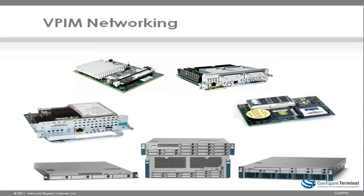I explained VPIM networking, where we networked multiple devices including Cisco Unity Express with Cisco Unity Express, as well as Cisco Unity Express with Cisco Unity Connection. VPIM allows for the transmission of voice messages between multiple messaging systems, including Cisco Unity, Cisco Unity Connection, Cisco Unity Express, and third-party messaging systems. Please ensure that you watch the VPIM networking video before continuing, as I explain the basics of sending and receiving messages between multiple messaging systems. I'm now going to assume that you understand the basics of networking servers, as covered in the VPIM networking video.